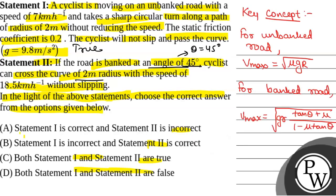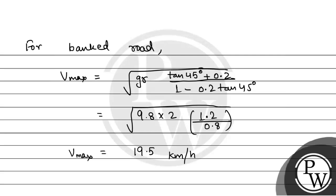Also, there is another aspect for banked road. For banked road, we can calculate Vmin equals the square root of g r times tan theta minus mu divided by 1 plus mu tan theta, equals the square root of 9.8 times 2 times 1 minus 0.2 by 1 plus 0.2. So that will be, on solving, we will get it as 12 kilometers per hour.